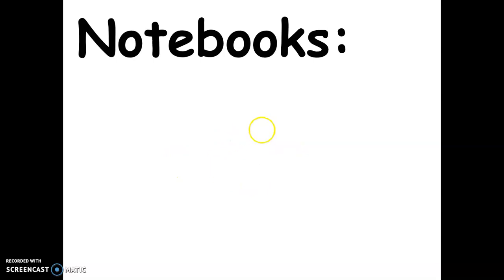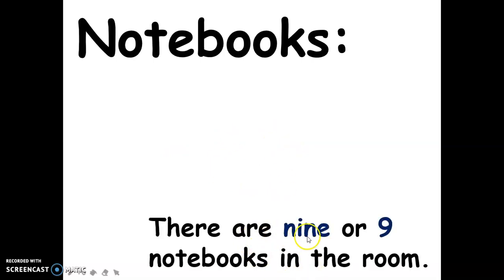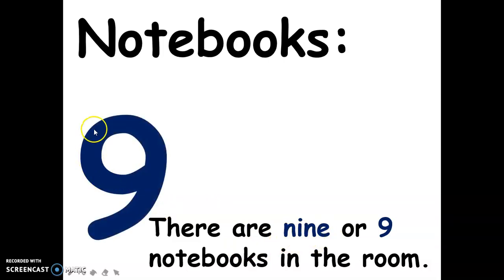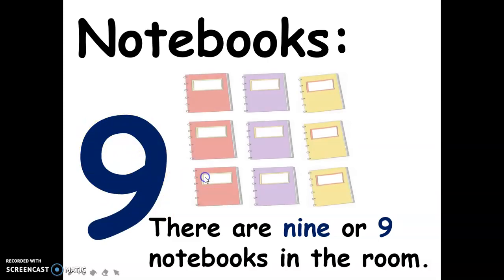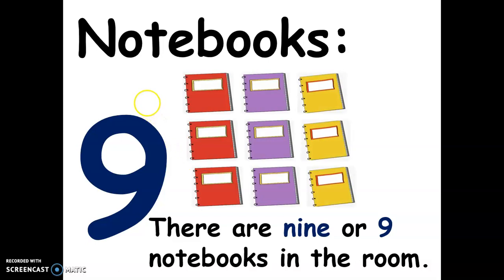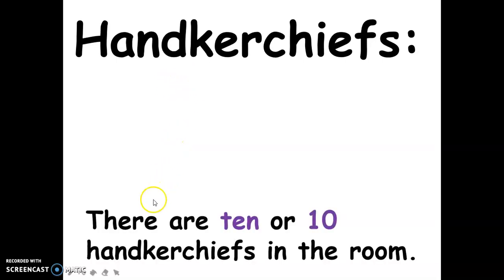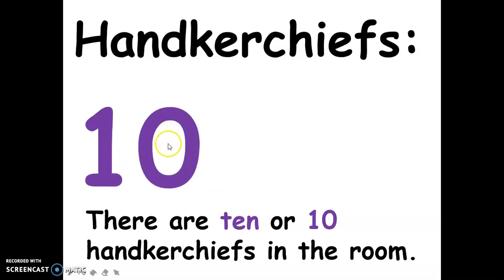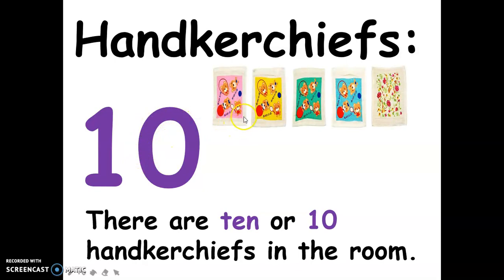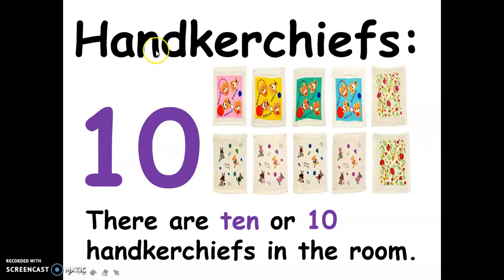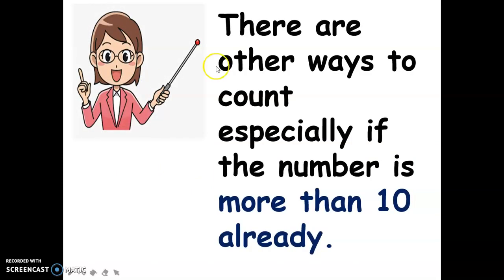Next, the notebooks — there are nine notebooks in the room. This is the spelling of nine, and this is the numerical symbol for nine. And the handkerchiefs — there are ten handkerchiefs in the room. This is the spelling of ten, this is the numerical symbol for ten, and these are her ten handkerchiefs.